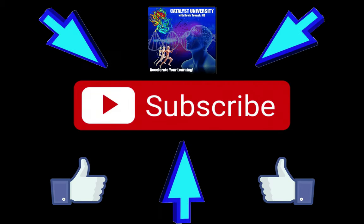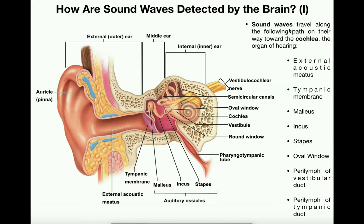Welcome back to Anatomy on Catalyst University. My name is Kevin Tokov. Please make sure to like this video and subscribe to my channel for future videos and notifications. In the previous video, we talked about sound waves — we defined what they are and discussed how sound waves move from the external environment through the ear and ultimately penetrate the cochlea, which is the organ of hearing.